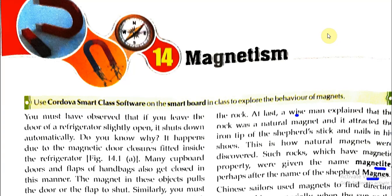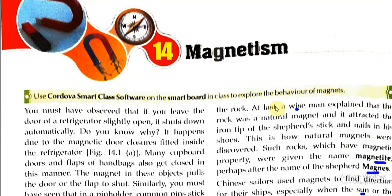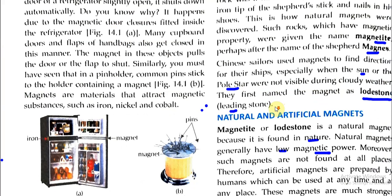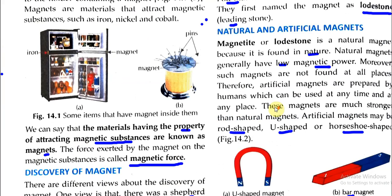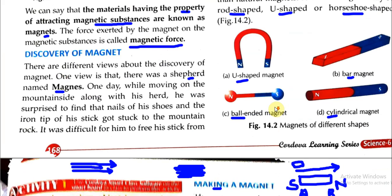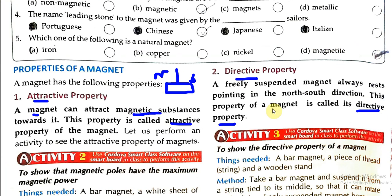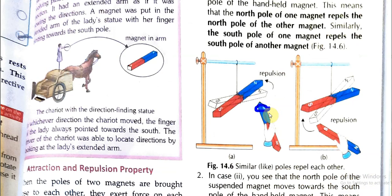We are continuing chapter number 14, Magnetism. In our first video we already studied most of the things of this chapter, like what is a natural and artificial magnet, the discovery of magnet, how we can prepare a magnet from a simple iron piece, and the properties also. So today our topic will be: poles of a magnet always exist in pairs.